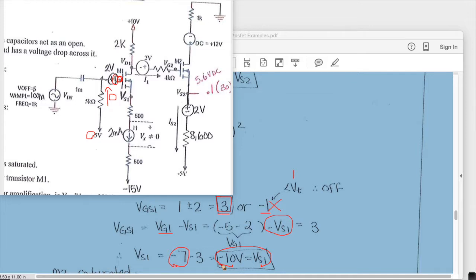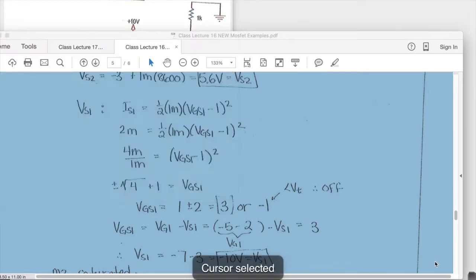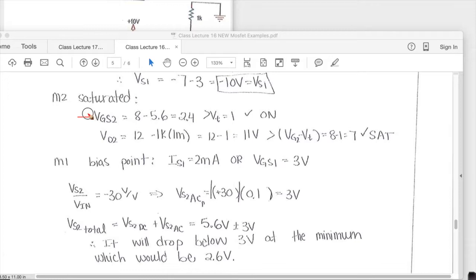So now we want to prove that these transistors are saturated. So the conditions to do that are to say that VGS is greater than or equal to VT and in this case we had 8 minus 0.56 which gives us 2.4 so it is. So this is back to M2.